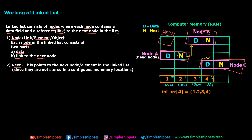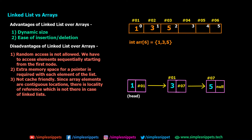Now let's understand the pros and cons of linked list over an array. The two main advantages of linked list over array are dynamic size and ease of insertion and deletion. In the array example here, the array is of size 6 but is only storing three values: 1, 3, and 5. You cannot change the size once you have defined it — arrays have a static size that must be pre-defined. So three memory blocks are wasted, and in real-world programming where array sizes are huge, this wastes a lot of memory and makes your program inefficient.